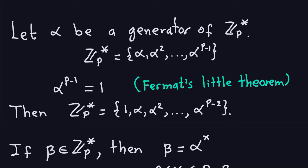I'm going to start with some setup. I'm going to take alpha to be a generator of Cp-star, which means Cp-star is just the powers of alpha from the first to the p-1. I'm going to simplify this using Fermat's little theorem, which says any number to the p-1 is congruent to one modulo the prime. Since the prime doesn't divide alpha, alpha to the p-1 is just one.